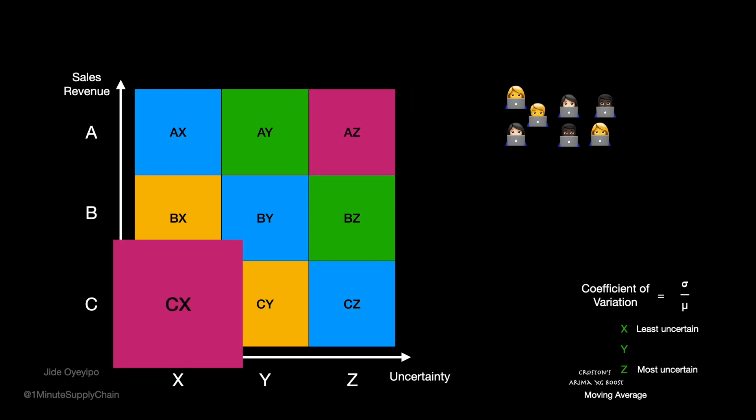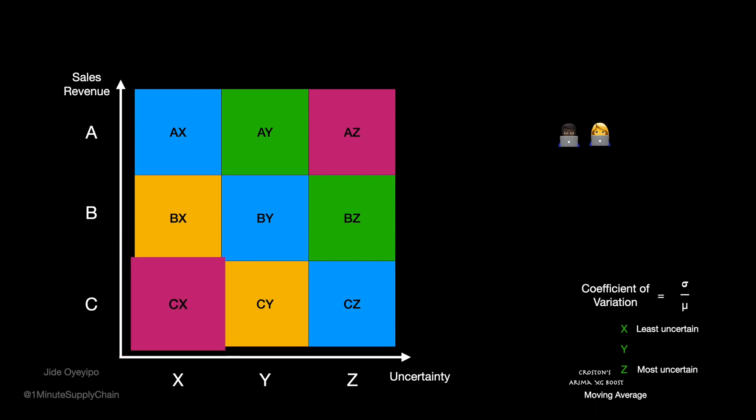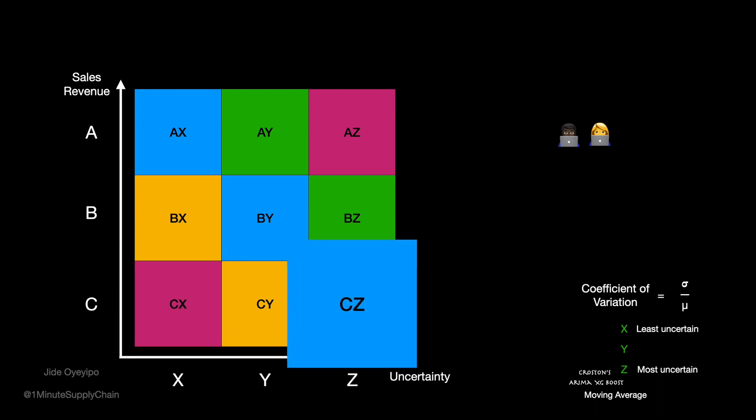CX category requires simple forecasting methods with little to no human intervention. Finally, the CZ category should require the least amount of effort, either by human or technology. These can be planned by setting a safety stock level and placing replenishment orders once the stock levels fall below a predefined level.